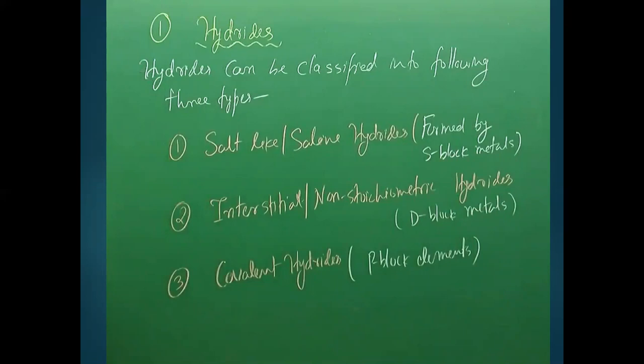The third category is covalent hydrides, formed by p-block elements from group 13 to 17. Although group 18 is also p-block, noble gases cannot form hydrides. Similarly, not all d-block groups form metallic hydrides, which we will study in detail later.